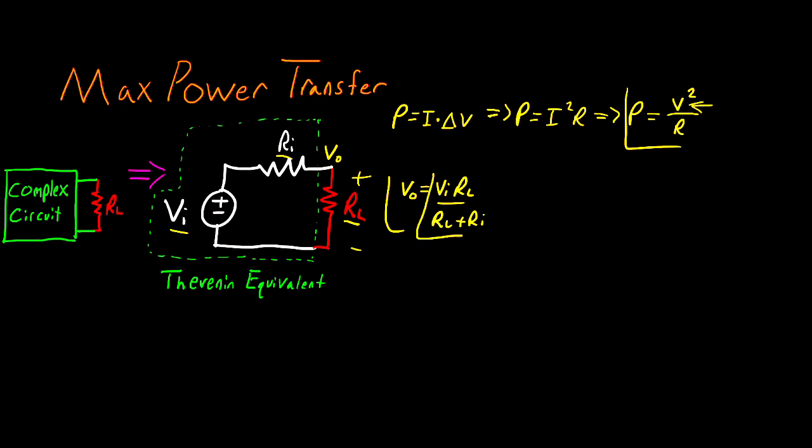So now I know that this quantity right here is this V right here. So if we plug that in what we'll have is 1 over RL, because that is going to be the RL that we have, multiplied by Vi RL divided by RL plus Ri. And this quantity is going to be squared because this is our squared voltage term. And this is equal to the power absorbed by RL.